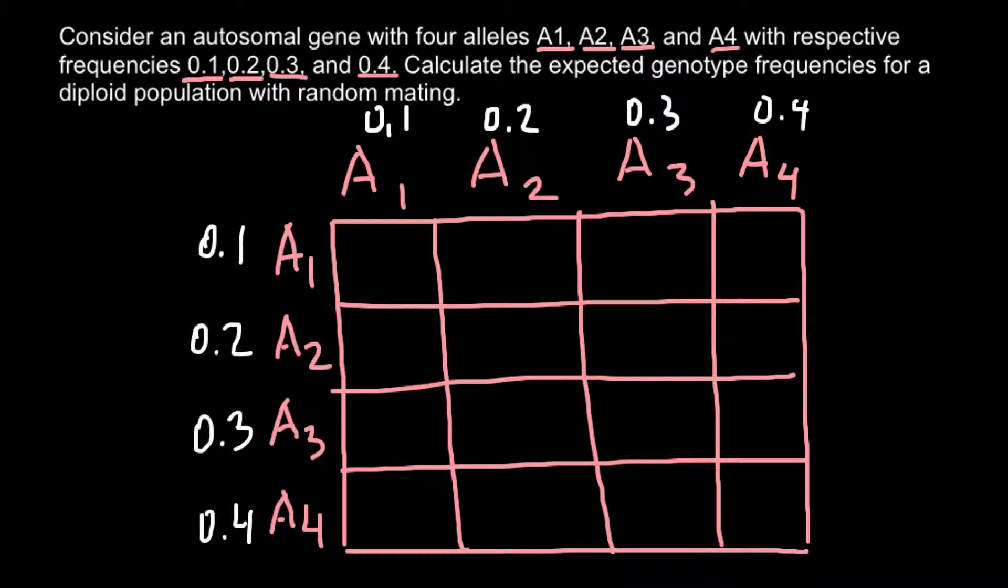Now we can find all the possible combinations and their frequencies. For example, for the combination of allele A1 and A1, the frequency would be 0.1 times 0.1, so the answer would be 0.01.